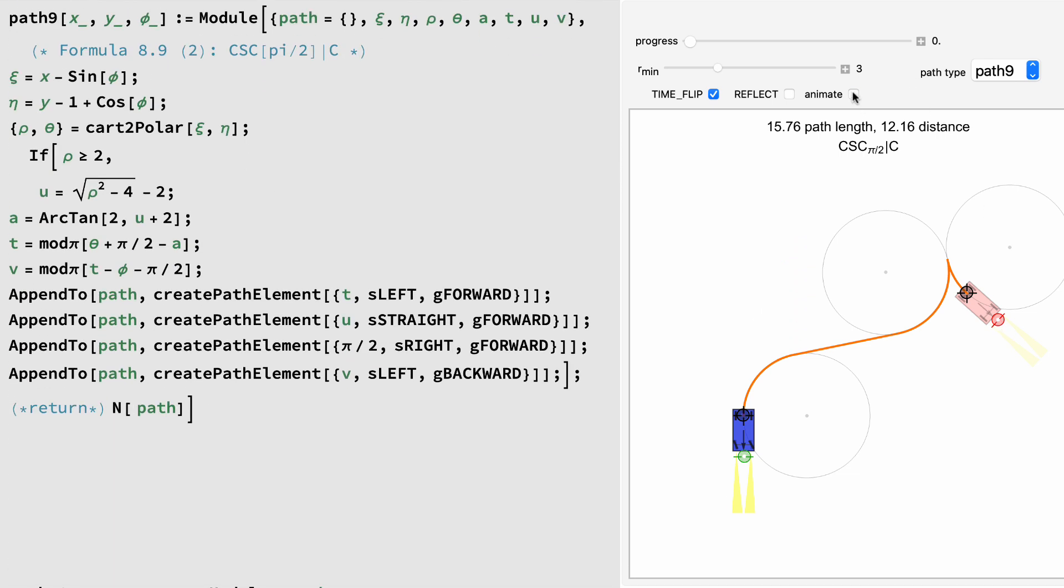Path 9 is a curve, straight, curve of 90 degrees, gear shift, curve. Path 9 also has four trig operations and a Cartesian to polar conversion.